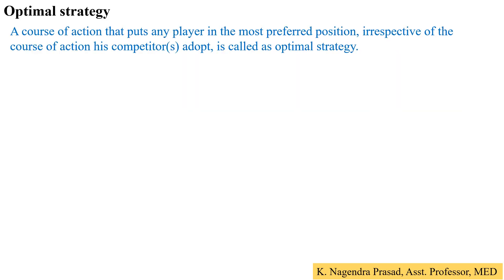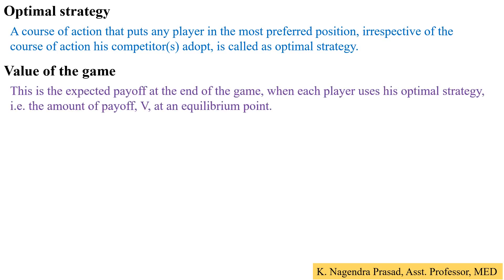Optimal strategy is the course of action that puts any player in the most preferred position, irrespective of the course of action their competitors adopt. The value of the game is the expected payoff at the end of the game when each player uses their optimal strategy — represented by capital V at the equilibrium point, where the minimax value equals the maximin value equals the saddle point.